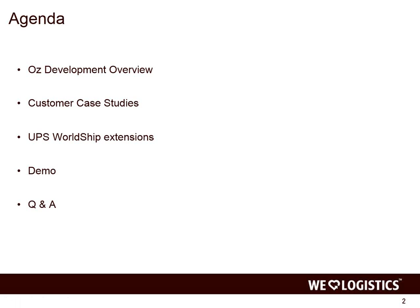In terms of the agenda, just a quick discussion and update on Oz Development to understand the various solutions we have. We tend to spend a fair bit of time talking about the capabilities and the ability to leverage OzLink to extend WorldShip, but we usually weave it into customer case studies and real use cases where we've worked with customers in the field. We'll have a demo at the end showing a newer capability we call the Weather API, which allows you to incorporate destination temperatures into your shipping process. Feel free to ask questions as we step through this.